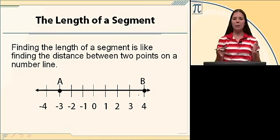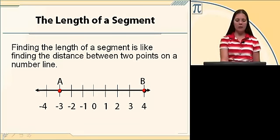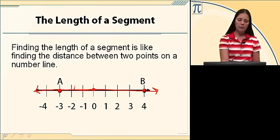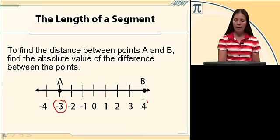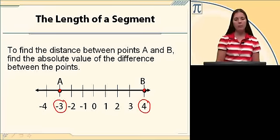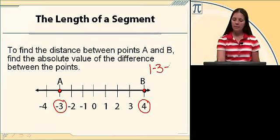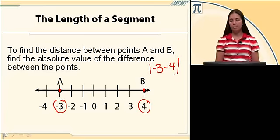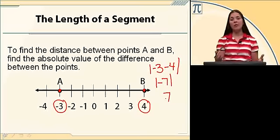When you find the length of a segment, it's like finding the distance between two points on a number line. In this case, I have point A and point B on a number line. As I move towards the left, my numbers go negative; as I move towards the right, they become positive. When we find the distance, we use the values — negative three and four in this case — because those are the values for point A and point B. We're going to find the absolute value of their difference, meaning we subtract and then find the absolute value. That gives us the absolute value of negative seven, which is seven.